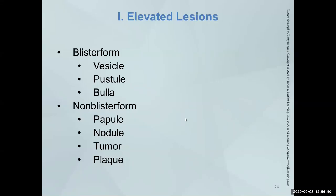There are many terms you need to be aware of and have chair-side. You need to know the difference between a vesicle, a pustule, and a bulla — these are usually sizes of blister-form lesions that are fluid-filled. Then you have non-blister-form lesions: papule, nodule, tumor, or plaque — these are solid and don't contain fluid. Know what the sizes are, as these are also board exam questions when you're getting your license.